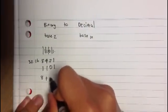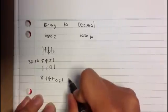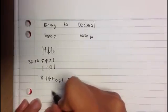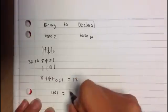plus 4, plus 0, plus 1, which would equal 13. So the number 1101 in binary would equal 13 in decimal.